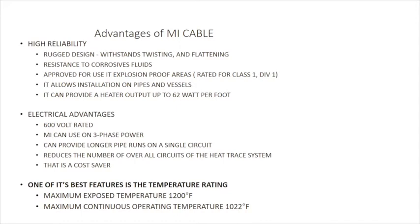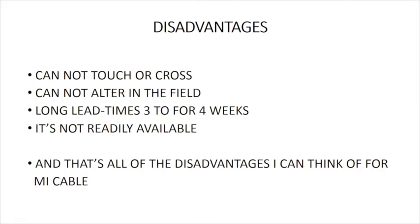Now let's talk about the disadvantages of MI cable. The first disadvantage is that you can't touch or cross it to itself — if you do, it will continue to heat in that area until it burns itself out. Next, you can't alter it in the field. Remember, MI cable is very moisture sensitive. It's created in a climate-controlled environment, so when you order it there is a lead time associated with it — typically three to four weeks. That means you can't get it off the shelf from a local supplier; it has to be designed and ordered.